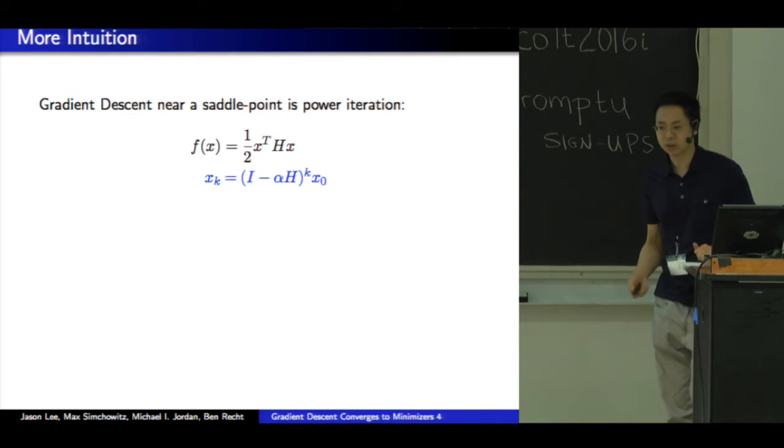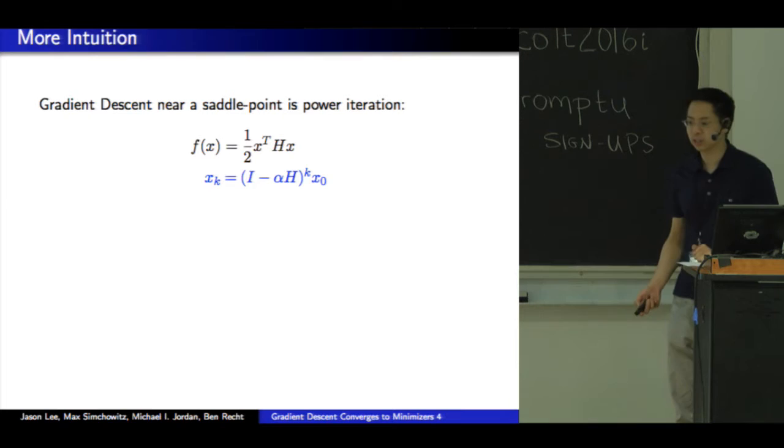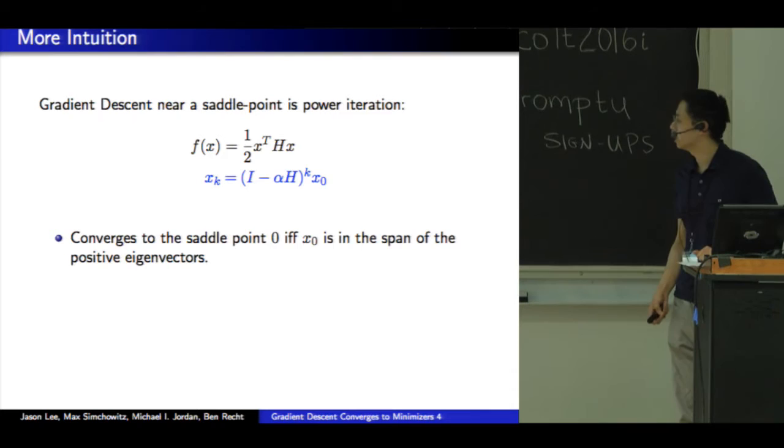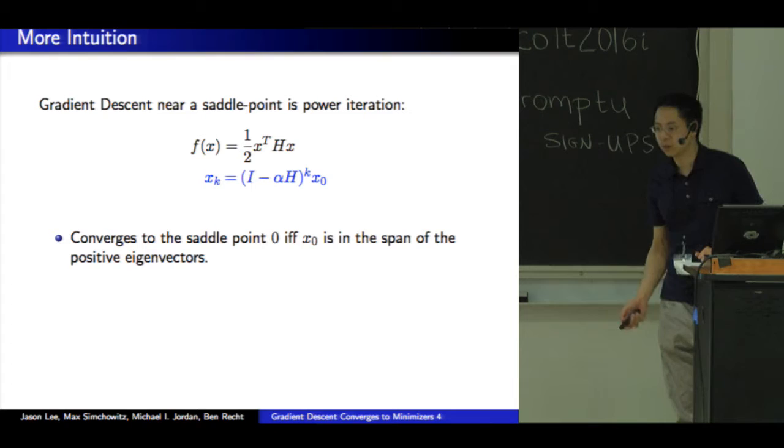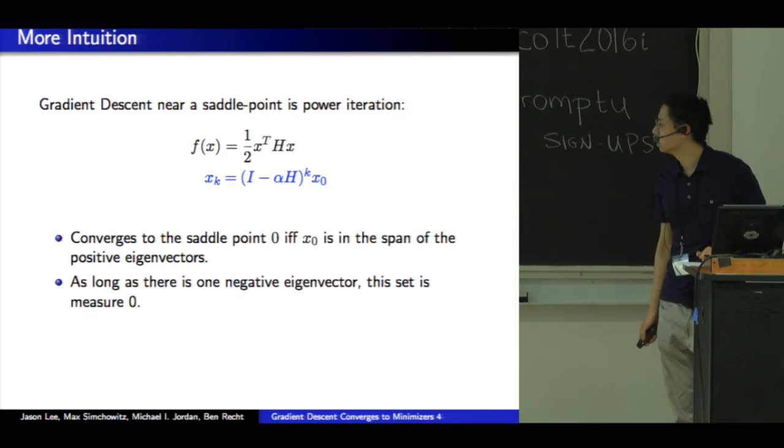Some analytical intuition for those that don't like pictures. Consider a simple quadratic where the saddle point is at the origin. It's easy to check that gradient descent essentially resembles power iteration on the identity minus the quadratic h. So the only way that this converges to a saddle point is if your initial point, x0, is in the span of the positive eigenvectors. If you have any component along a negative eigenvector, you would diverge.